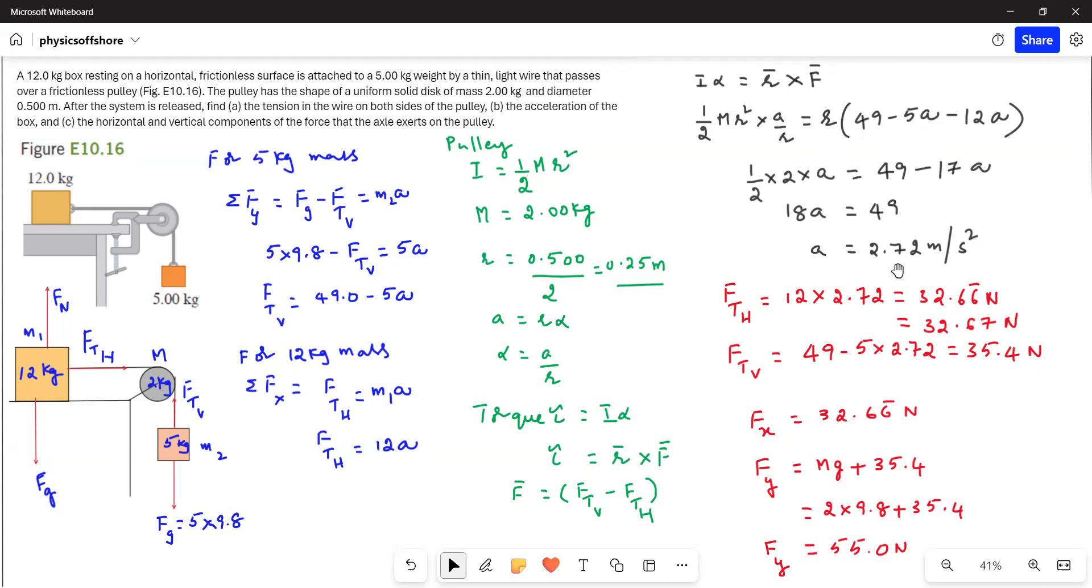On simplifying, we get a equals 2.72 meters per second squared. Now Fth equals 12a, therefore putting a equals 2.72, we get the horizontal tension as 32.67 newtons.